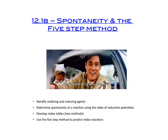The second half of 12.1 revolves around spontaneity and what we call the five-step method, which is used to predict redox reactions. Our goals are to identify oxidizing and reducing agents, to determine the spontaneity of a reaction using the table of reduction potentials in our data booklet, to develop redox tables on our own using two methods, and to use the five-step method to predict redox reactions. This is a long lesson, so I might split it into two videos.